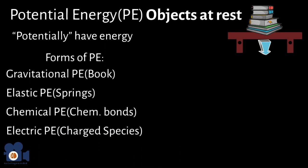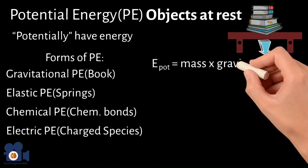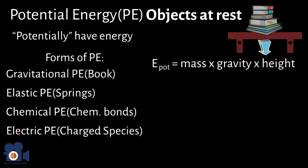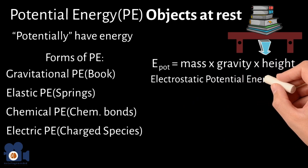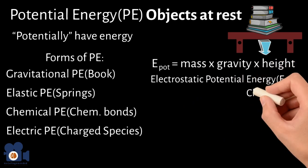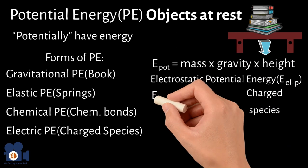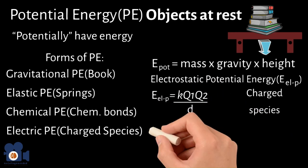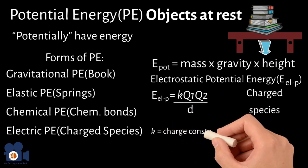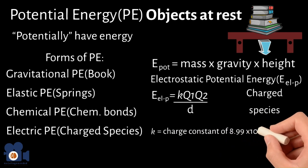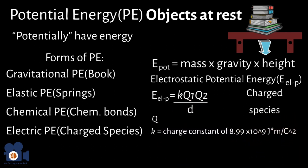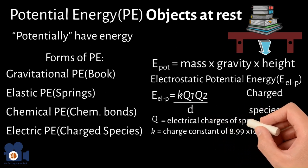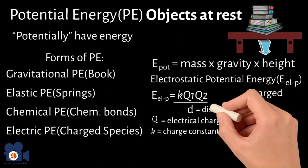Let's go over the two most common equations for potential energy. The first is E_potential equals mass times gravity times height — think of the book example. The second relates to electric potential energy (E_ELP), critical when dealing with charged atoms, molecules, or ions. The equation is E_ELP equals K times Q1 times Q2 divided by D, where K is the charge constant 8.99 × 10⁹ J·m/C², Q1 and Q2 are the electrical charges of the species, and D is the distance between them.